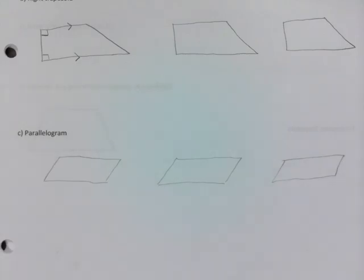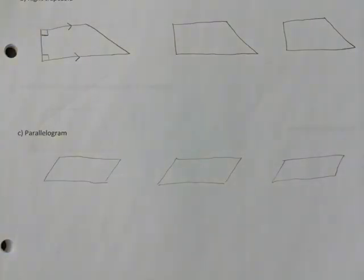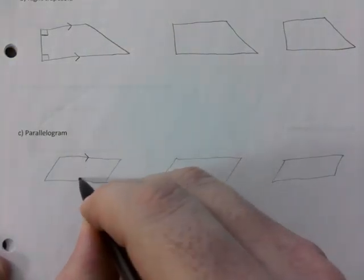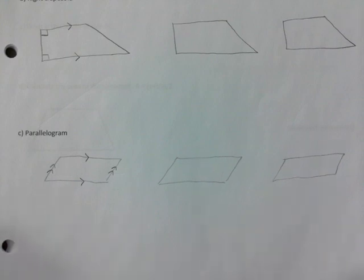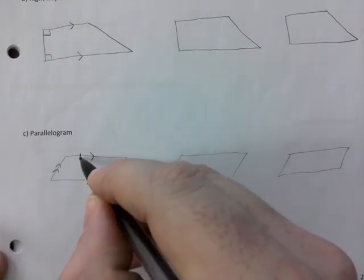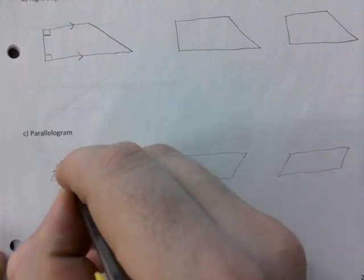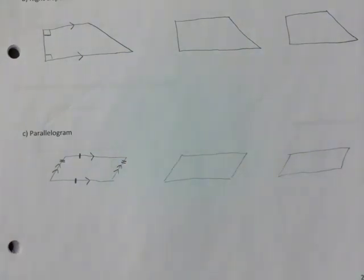One property would be it's got two pairs of parallel sides — that's one mark right there. Another one could be — it's going to be a bit busy — but this side measures the same as that side, and this side has the same length as that side: two pairs of parallel congruent sides.